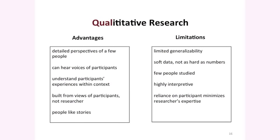Qualitative research has some distinct advantages too. We can hear those detailed voices of people, understand their experiences and the actual settings where things are occurring. The whole idea in qualitative is to build the perspective up from the views of participants, not from the researcher's perspective — so it's more realistic, and people like stories. Some of its limitations: it often draws on small samples, so we can't really apply it across a large number of people. It's also highly interpretive and relies on the researcher's interpretation to make sense of the stories that individuals provide.